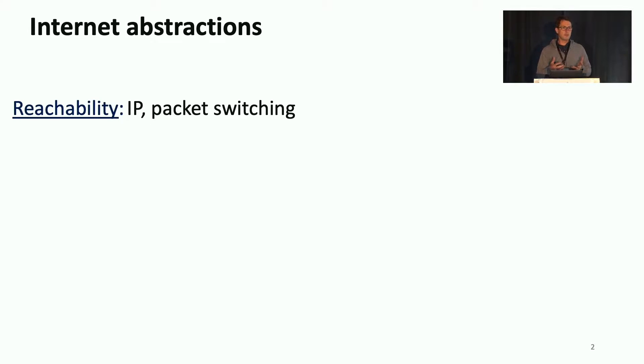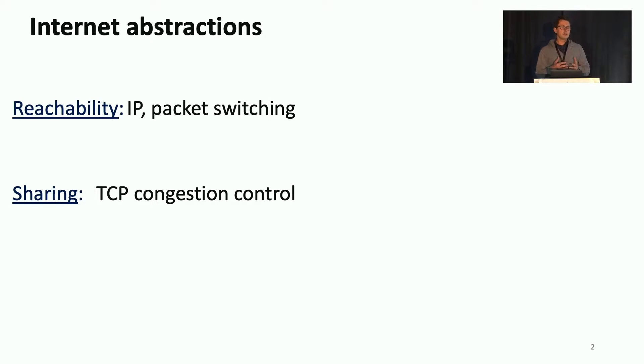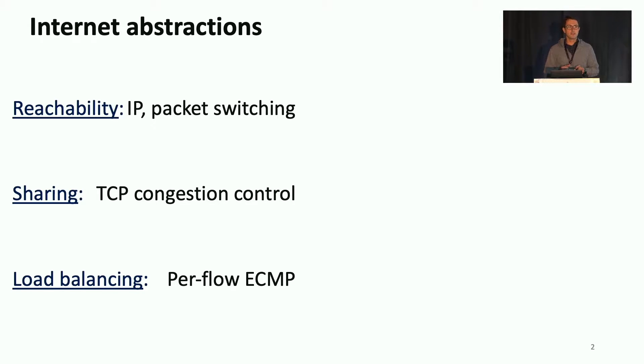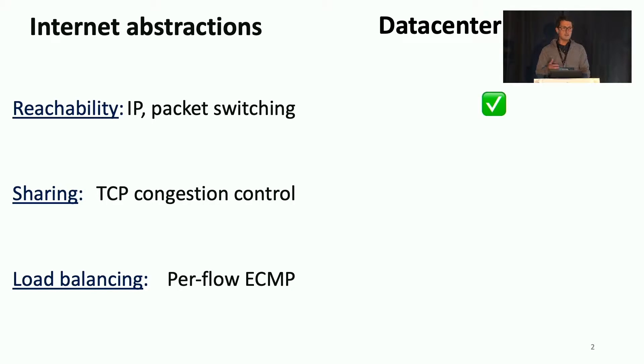What we believe is missing are abstractions for data center networking. What we did mostly for data centers was to just take the abstractions from the internet — that was IP, congestion control to share capacity, and then load balancing traffic across multiple paths using per-flow ECMP.